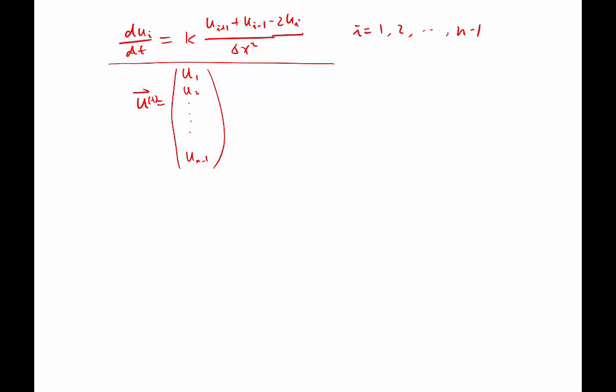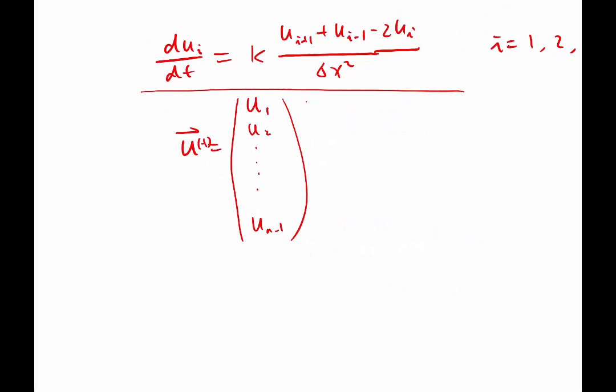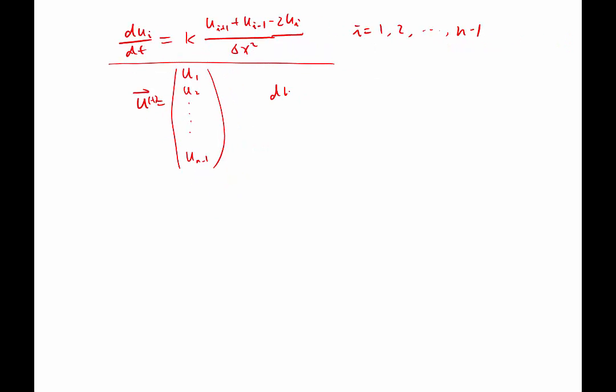Then what we have is du as a vector dt would be equal to something times u. What is that something? It's going to be a matrix, right?